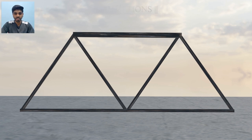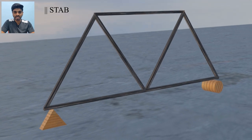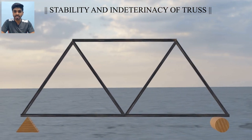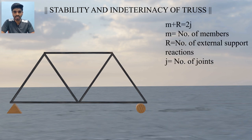Now we will talk about the stability of a truss — which arrangement of truss members makes it a stable structure. Let's recall the concept of determinacy. If we are able to find all forces in the truss members, the structure is called determinate. The equation is: total number of members (m) plus the number of external reactions (r) equals two times the number of joints (j), i.e., m + r = 2j. At each joint there are two equilibrium equations, so this equation lets us find the determinacy of the truss.